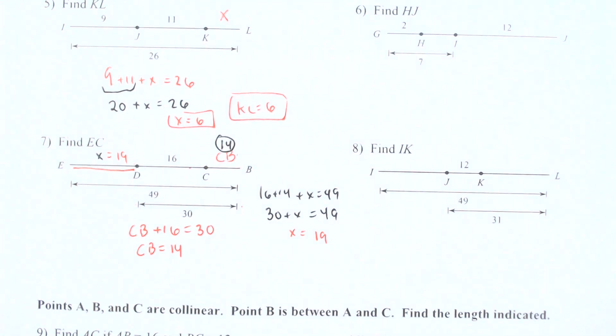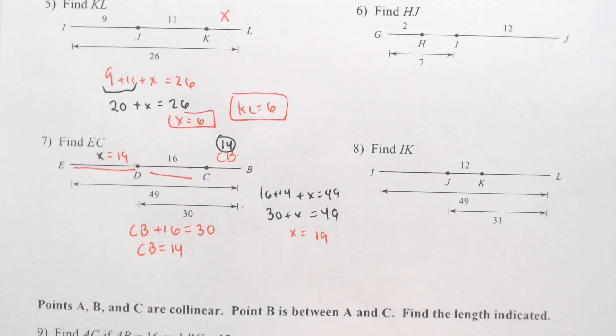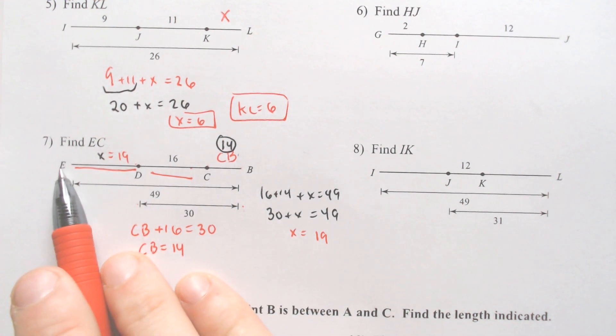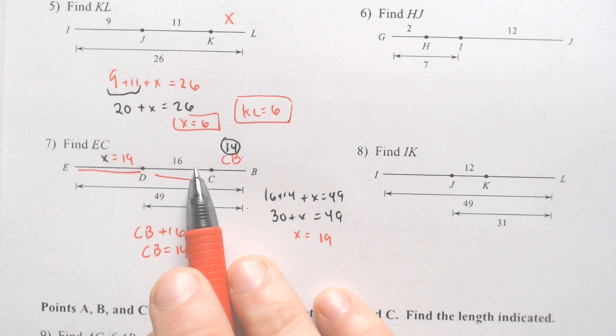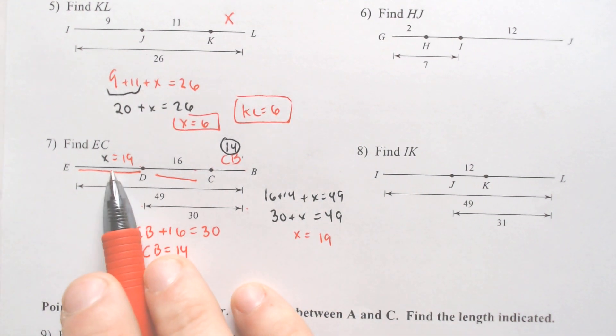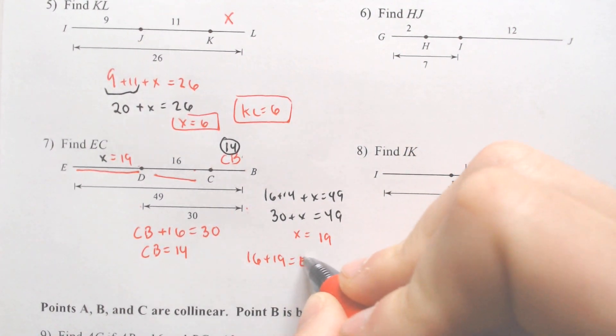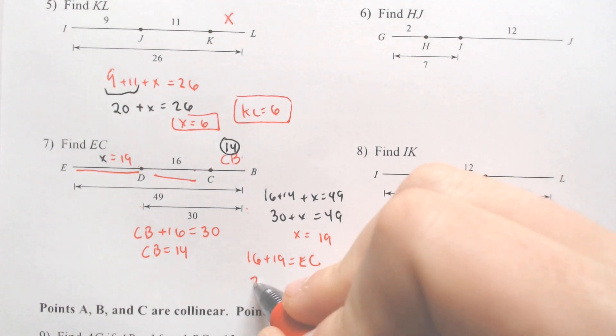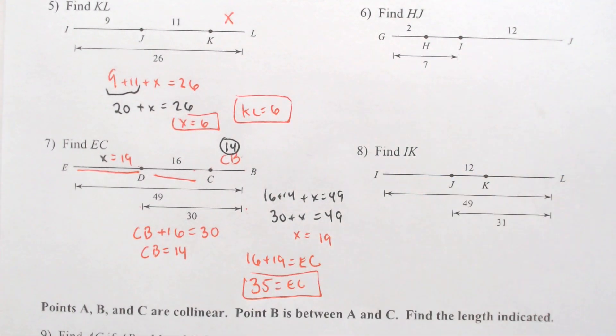Be careful because 19 is from here to here. 16 is from here to here. We're not asked to find 19 nor 16. We're asked to find E all the way to C, and E all the way to C equals 16 plus 19. 16 plus 19 equals E to C, which of course is equal to 35.